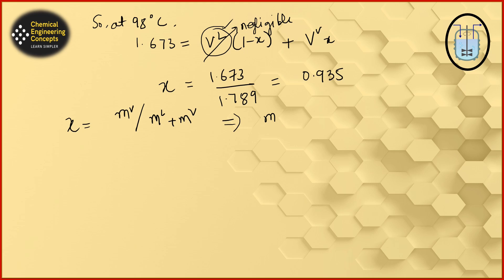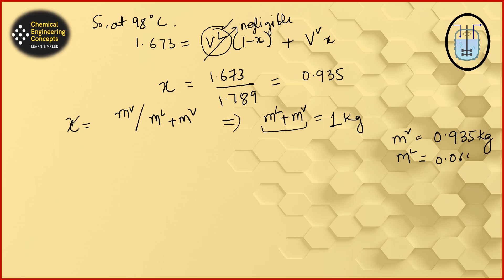The total mass of liquid plus vapor is 1 kilogram, as given in the problem. Since we know the total mass and the x value of 0.935, we can find the mass of vapor, m_v, which comes out to be 0.935 kilograms. Subtracting from one kilogram gives the liquid fraction as 0.065 kilograms. This is the amount of vapor that has been condensed.